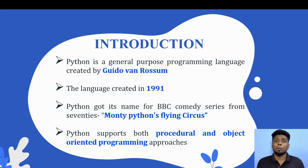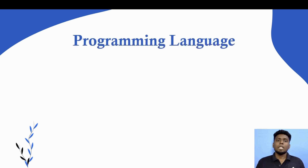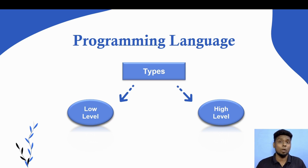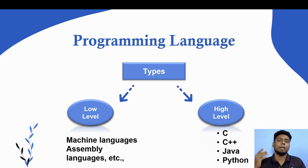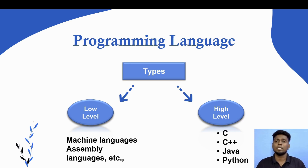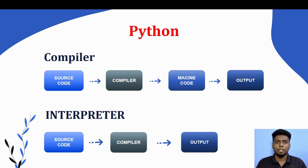Python is a general purpose programming language. There are low-level and high-level languages. Low-level languages use machine language and ASCII values. High-level languages include C, C++, Java, and Python. These are high-level languages. And this is actually the first interview question.